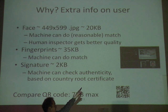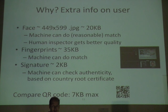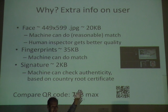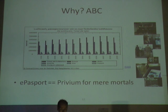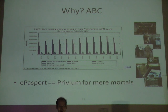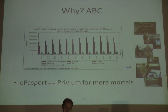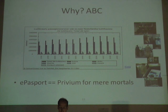A third reason for having a chip is automatic border control. Airports are seeing many more travelers — the number of passengers is growing — and border control staff are expensive, so they're looking for ways to make queues smaller and processing faster. Since you can do biometric comparison using your face, they've been piloting this and I think it's here to stay.